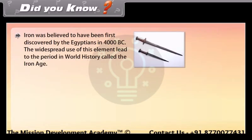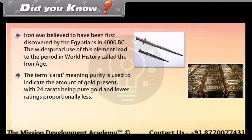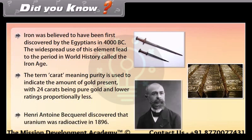Did you know? Iron was believed to have been first discovered by the Egyptians in 4000 BC, and its widespread use led to the period in world history called the Iron Age. The term carat, meaning purity, is used to indicate the amount of gold present, with 24 carats being pure gold. Henry Antoine Becquerel discovered that uranium was radioactive in 1896.